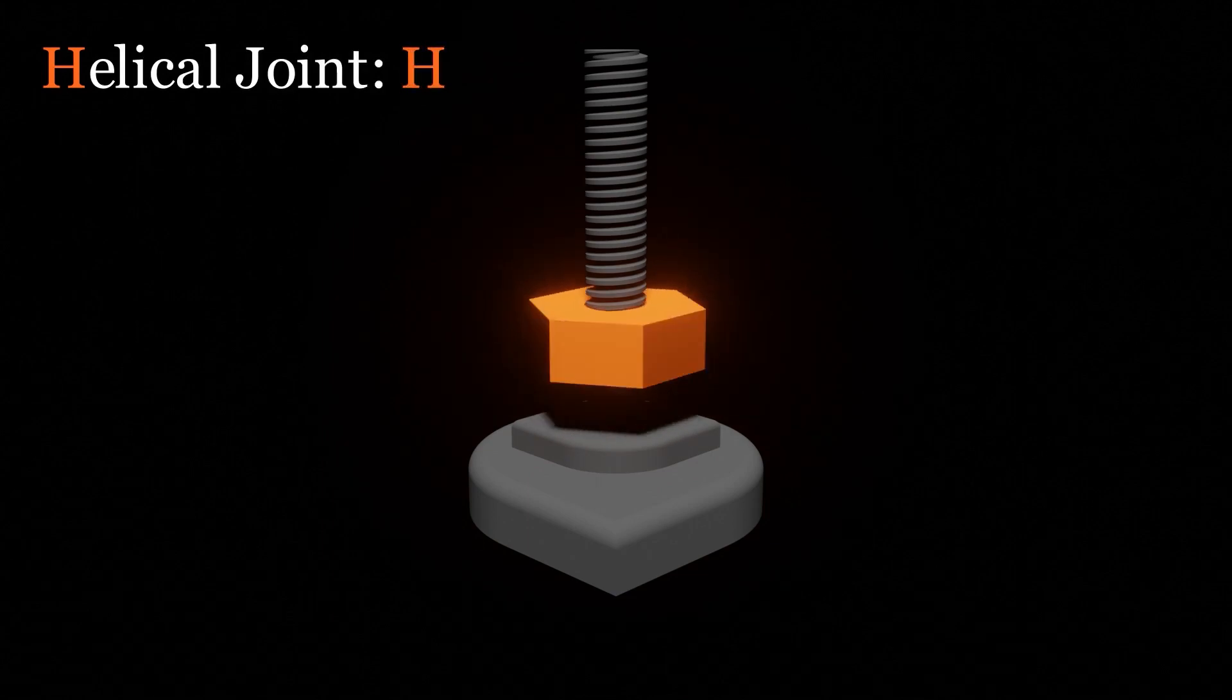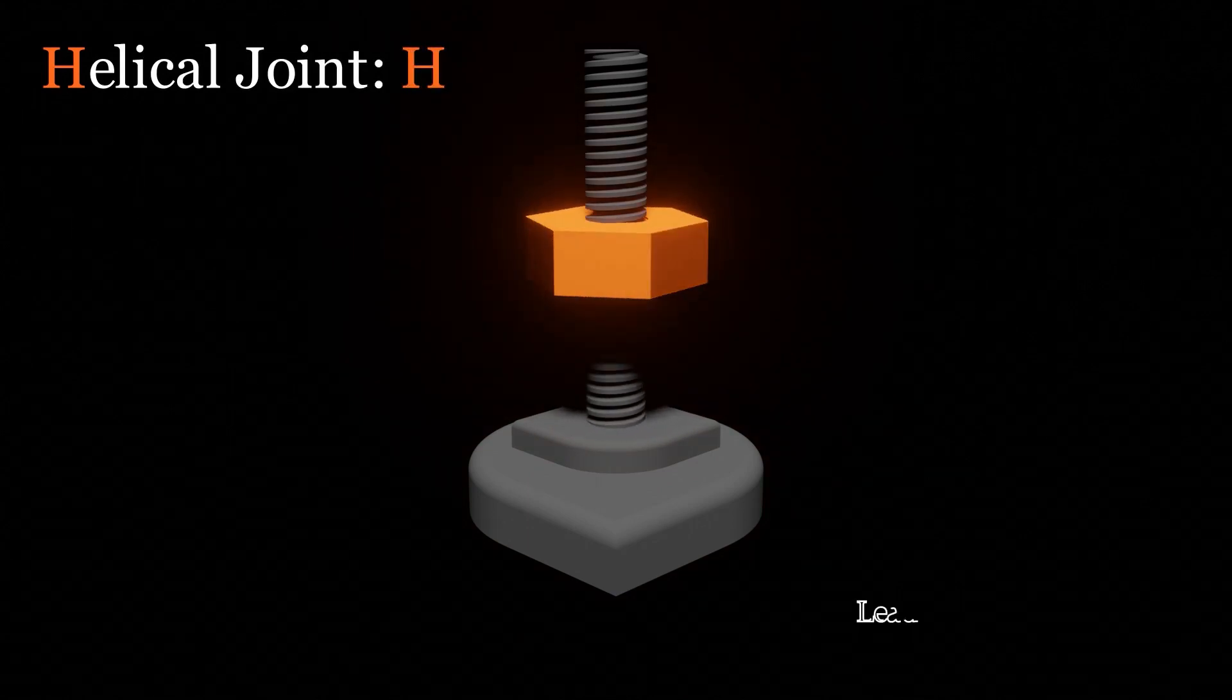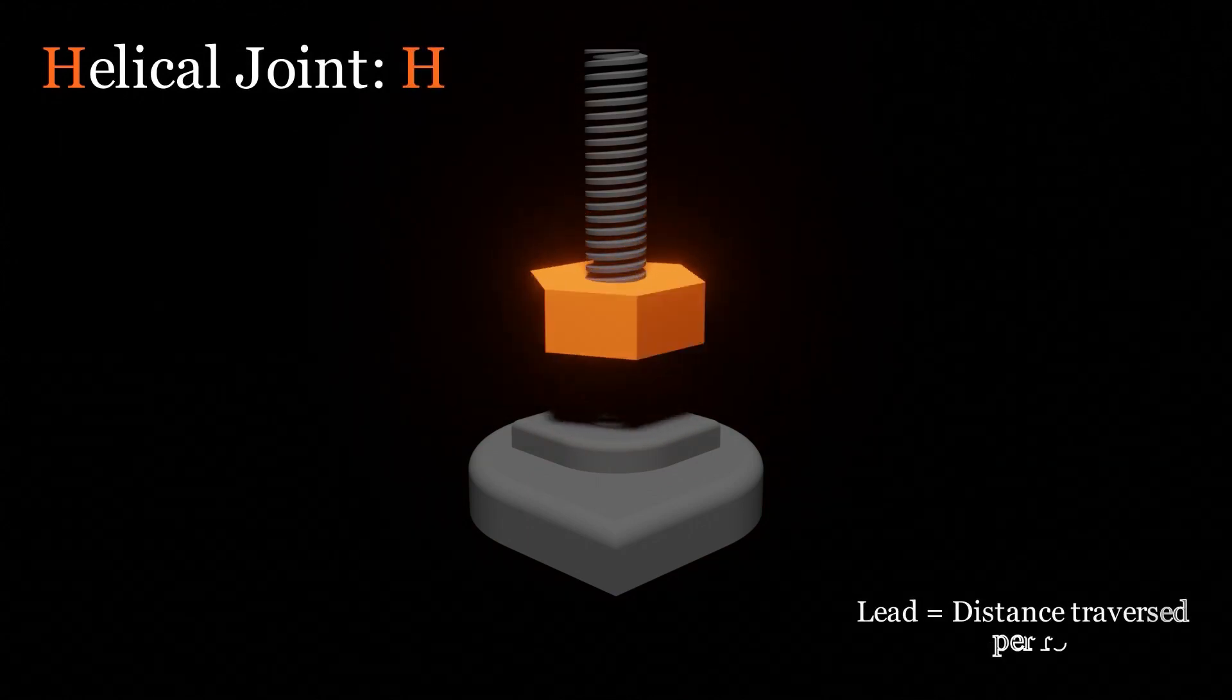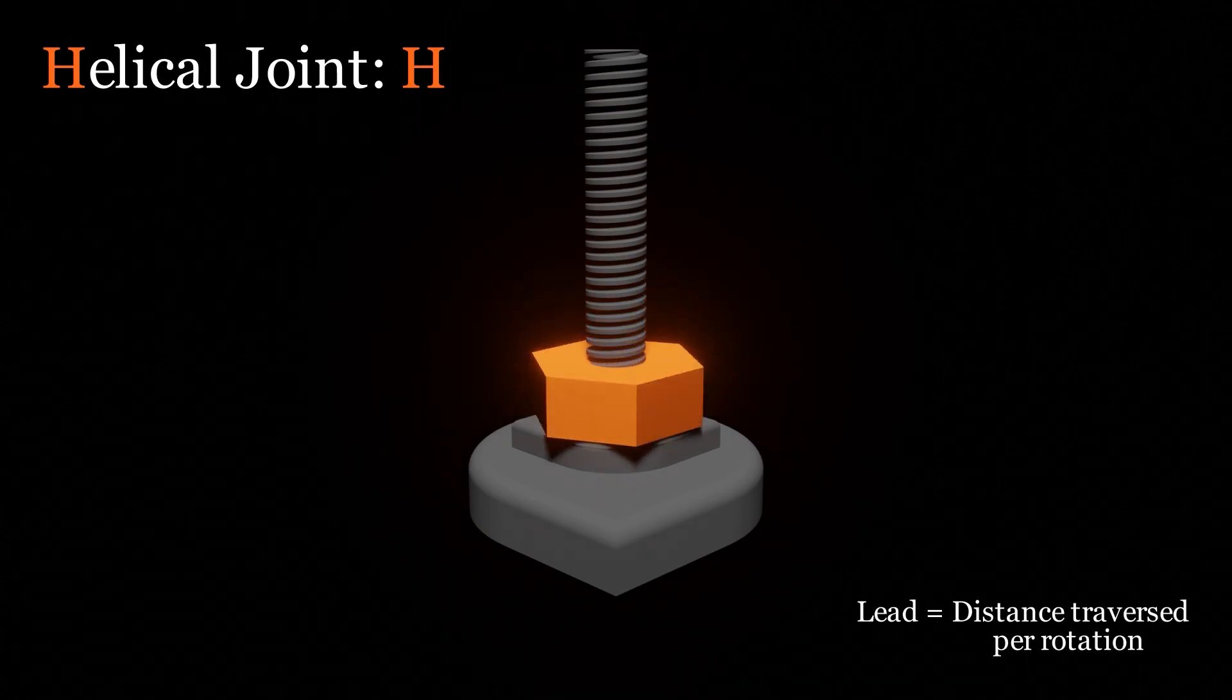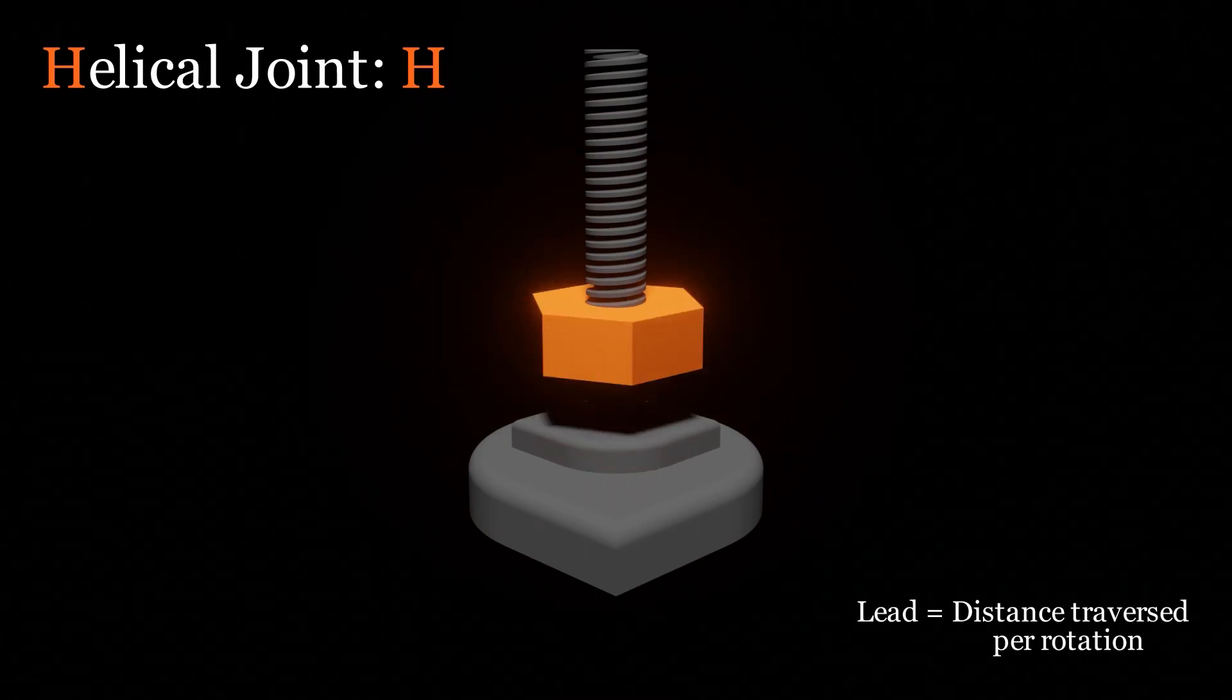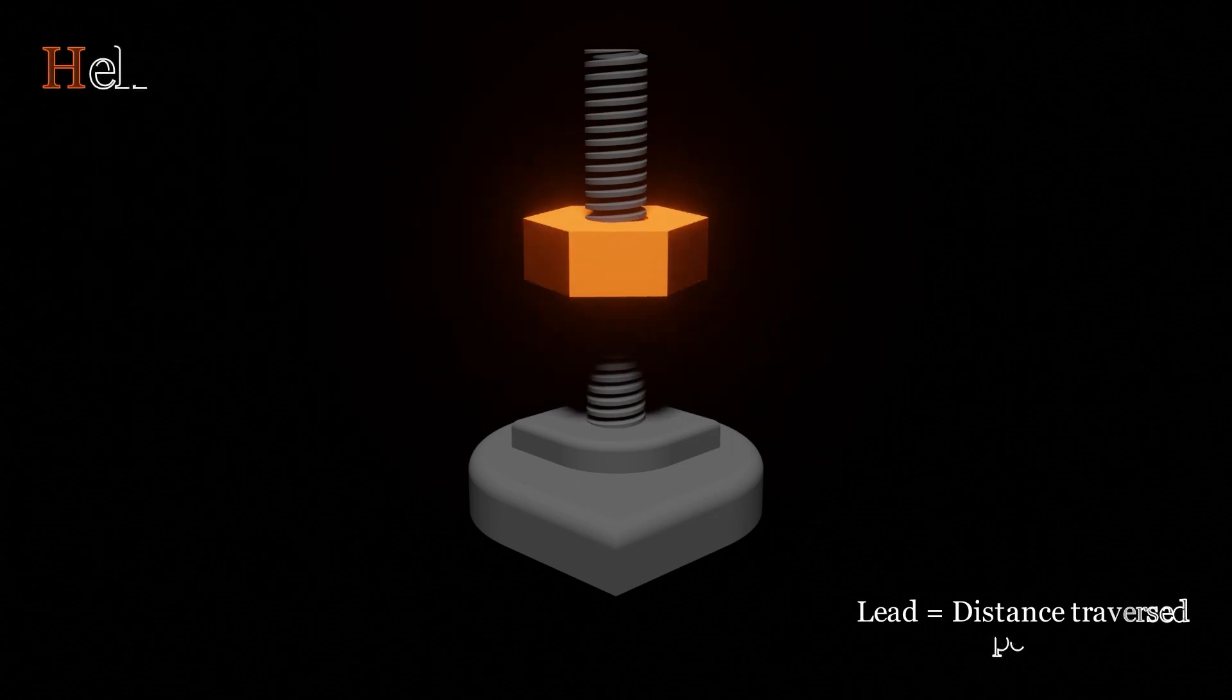A helical or screw joint can be thought of as a combination of revolute and prismatic joints. But the rotation and translation are coupled with one another. That is, there can be no independent rotation or translation.